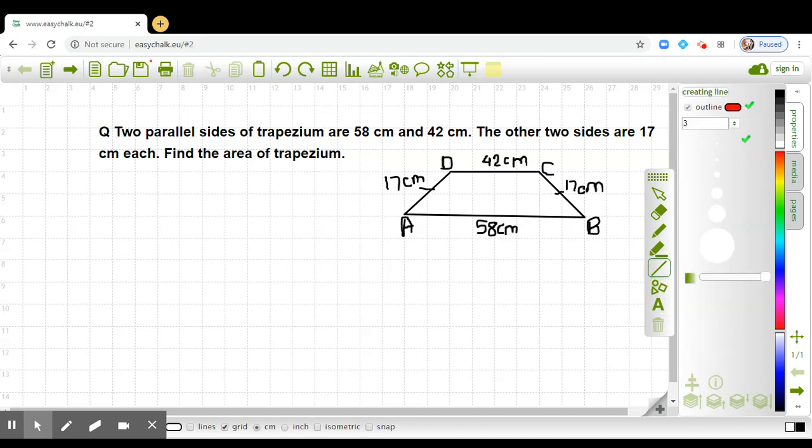Now you see that these are the perpendiculars, and the lengths of these perpendiculars will be the same as they are lying between the same parallel lines. So I am labeling it as DE and CF.